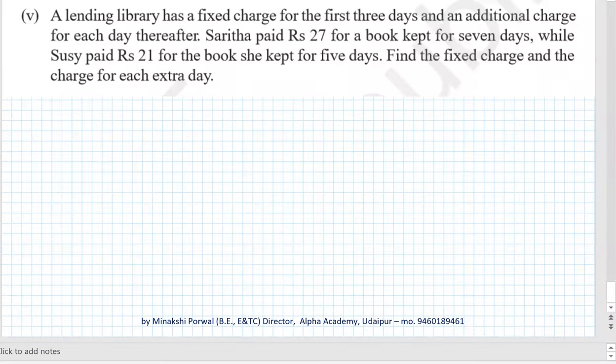Exercise 3.4, question number 5, part V. A lending library has a fixed charge for the first three days and an additional charge for each day thereafter. Sarita paid rupees 27 for a book kept for seven days, while Sushi paid rupees 21 for the book she kept for five days. Find the fixed charge and the charge for extra days.